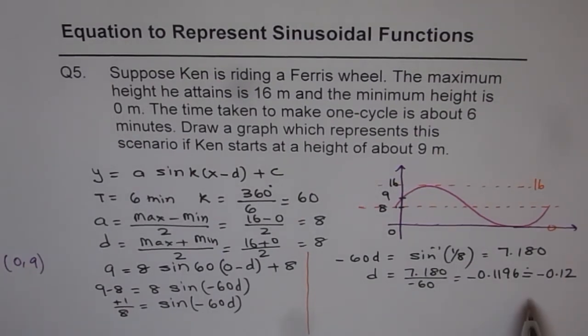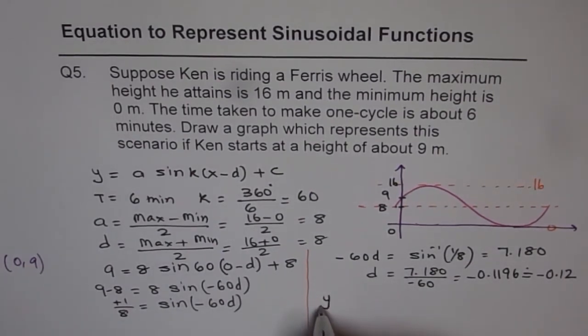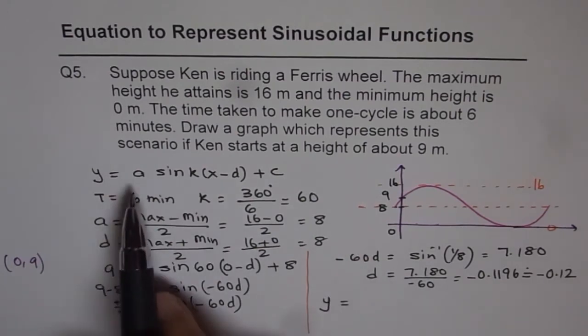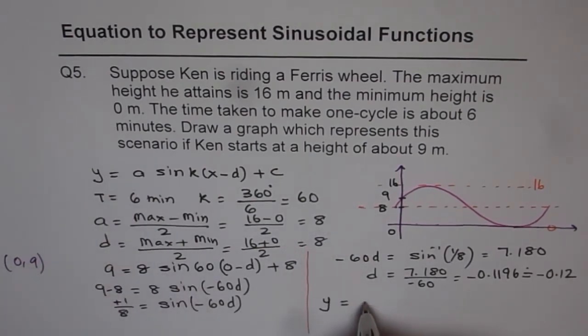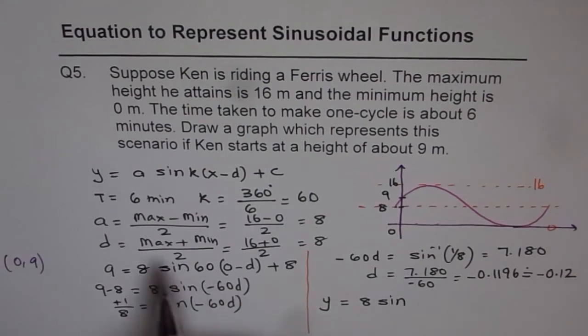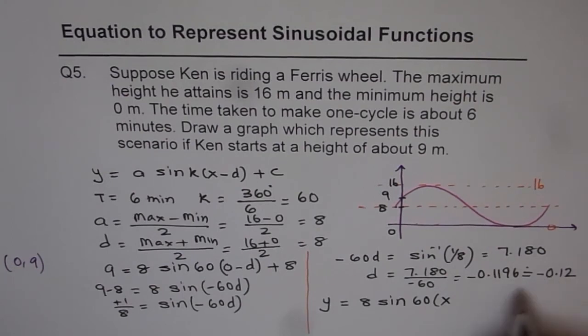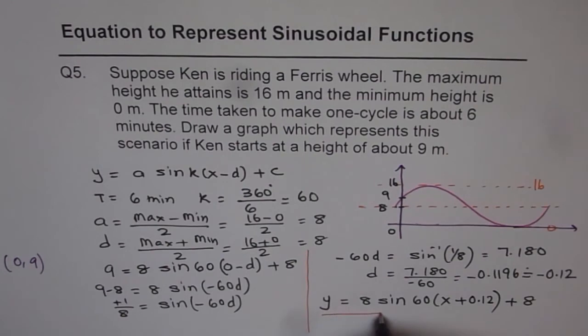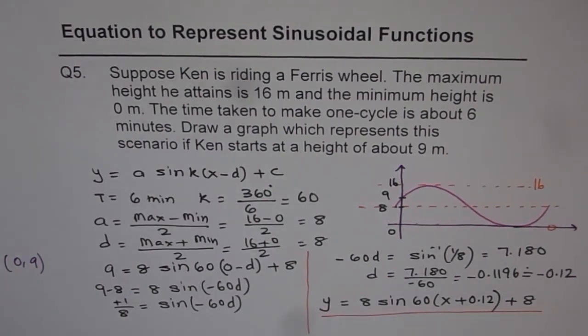Now knowing all this, we can write down our equation which is y equals a, a is 8 for us, sine of k, k is 60, x minus this, so minus and minus becomes plus 0.12 plus c which is 8. So that gives us the equation. So that is how we can find the equation from a given situation.